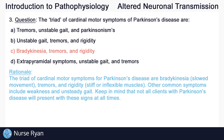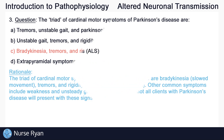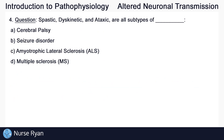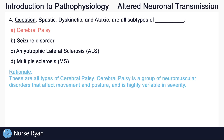Keep in mind that not all clients with Parkinson's disease will present with these signs at all times. Question number four: spastic, dyskinetic, and ataxic are all subtypes of? The answer here is A — these are all types of cerebral palsy. Cerebral palsy is a group of neuromuscular disorders that affect movement and posture and is highly variable in severity.